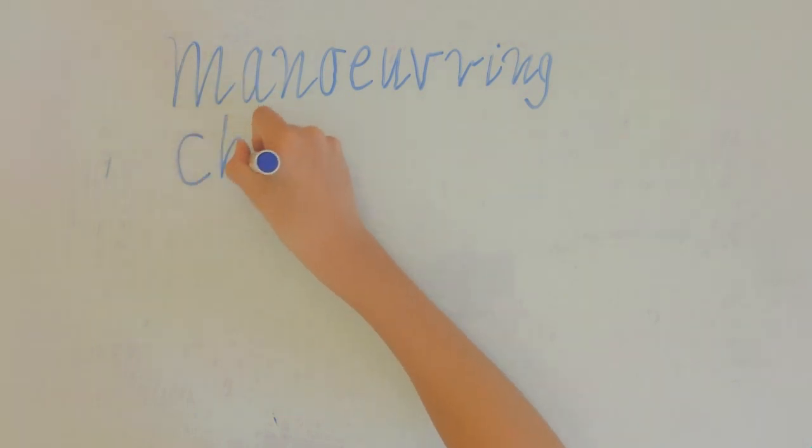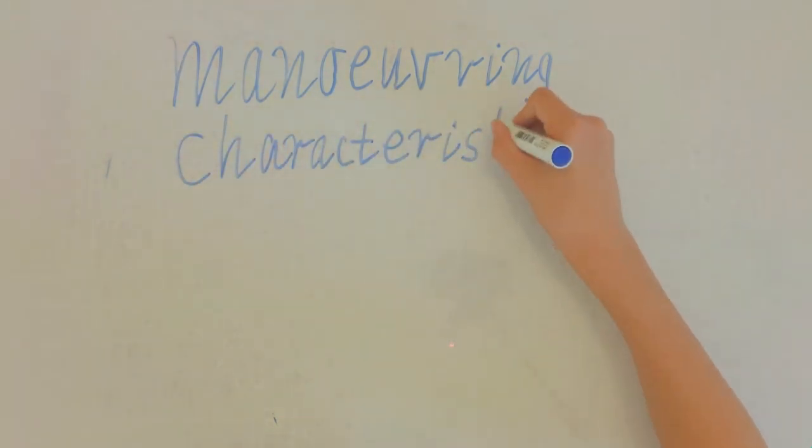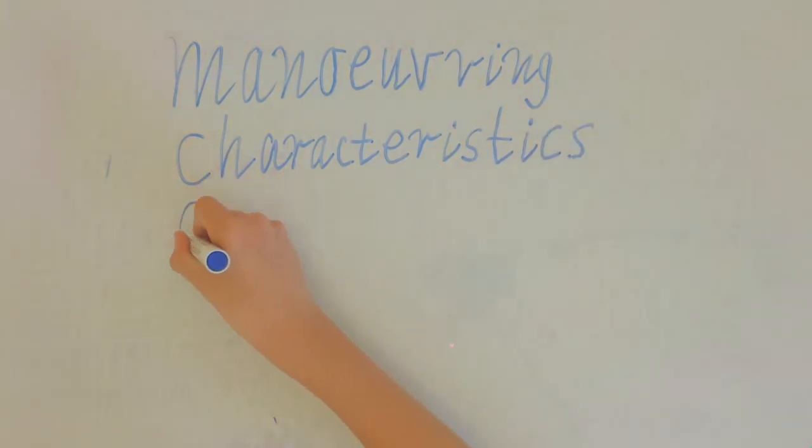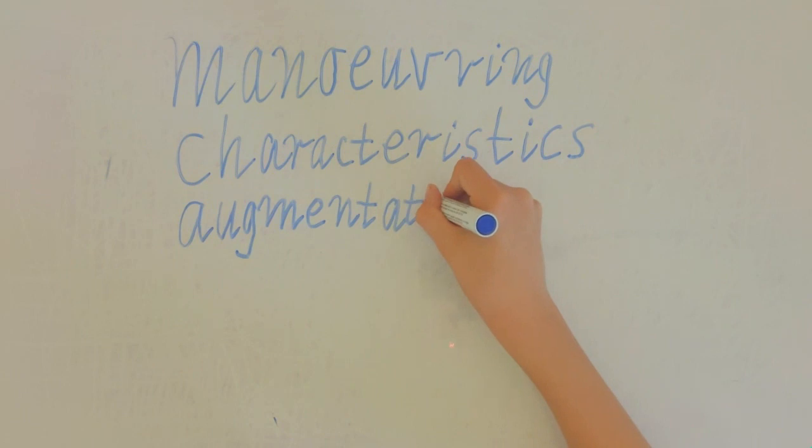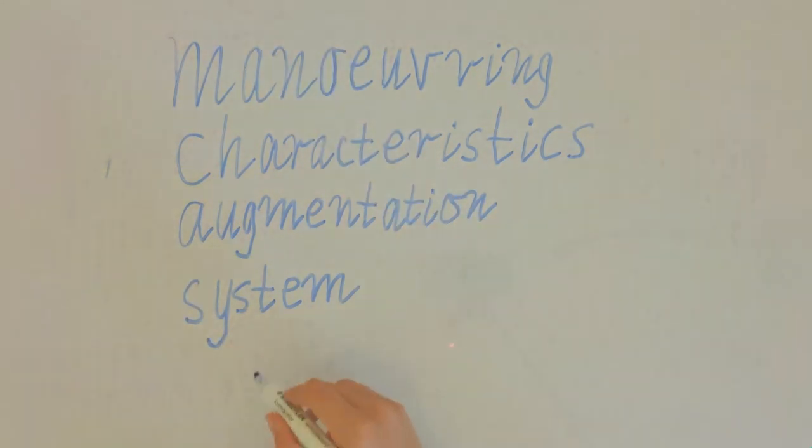Boeing engineers had first come up with the MCAS for use in the KC-46A Pegasus, a military fuel tanker airplane specifically developed for the United States Air Force. In the case of the 737 MAX 8, Boeing engineers designed the MCAS to activate when the plane had its flaps up, in a high thrust, and a high angle of attack. In other words, a stall scenario.